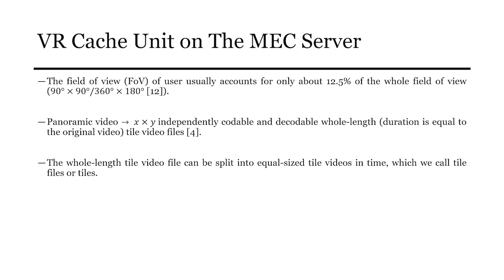There's one other thing we need to know. When a user watches a panorama VR video, the field of view of user usually accounts for only about 12.5% of the whole field of view. That means we don't need to transmit the entire VR video, only transmit the image within the user's FOV. The specific operation is that the panoramic video after equal rectangular projection is spatially and equidistantly divided into x times y independently codable and decodable whole tile video fields.